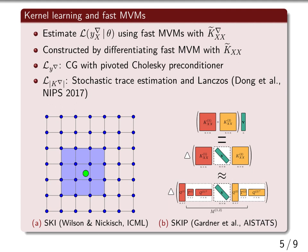Instead, we build fast matrix-vector multiplications (MVMs) with K∇, which is achieved by differentiating a fast-MVM with the original kernel matrix. We use a preconditioned conjugate gradient method to solve linear systems, and stochastic trace estimation for the log determinant, both of which rely only on fast-MVMs. Our fast-MVMs extend SKI and SKIP to incorporate gradient information, where SKI and SKIP exploit grid structure and kernel product structure together with Hadamard structure, respectively.